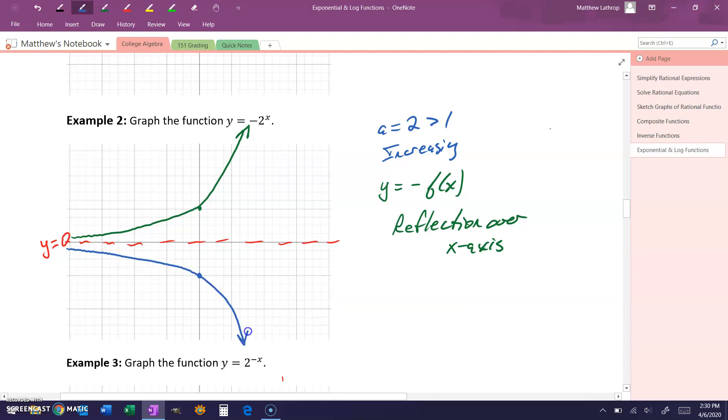So our exponential function will actually look something like this, where again, we're sketching and just using the fact that we know that original curve was increasing to get more or less that pattern. We could add specific points to give ourselves a little more definition here, but that serves as a sketch for that transformation.